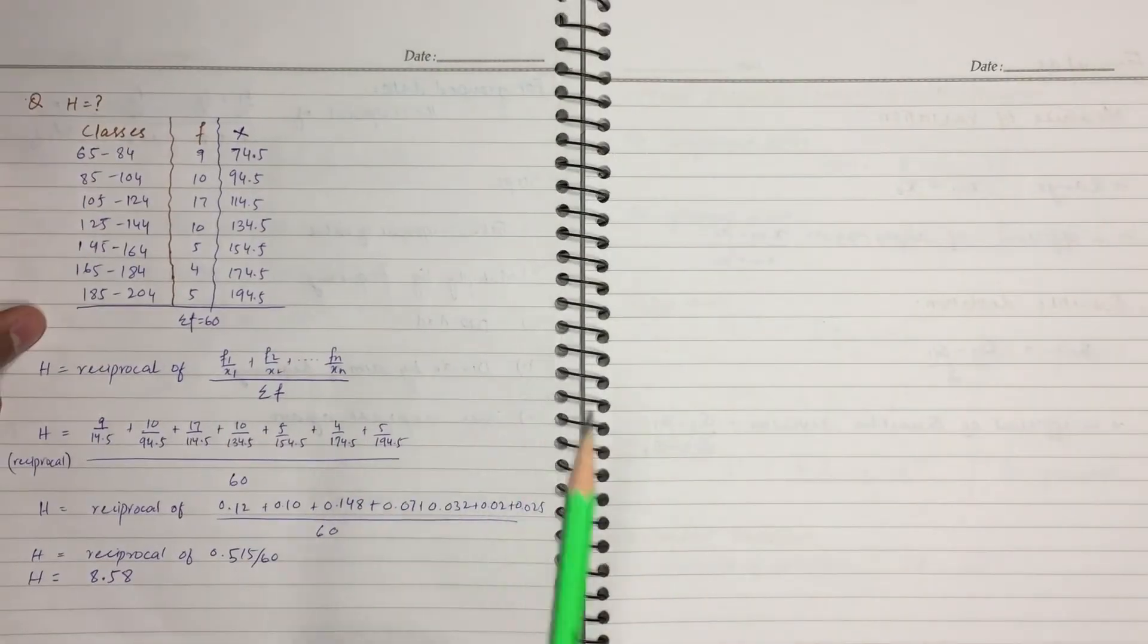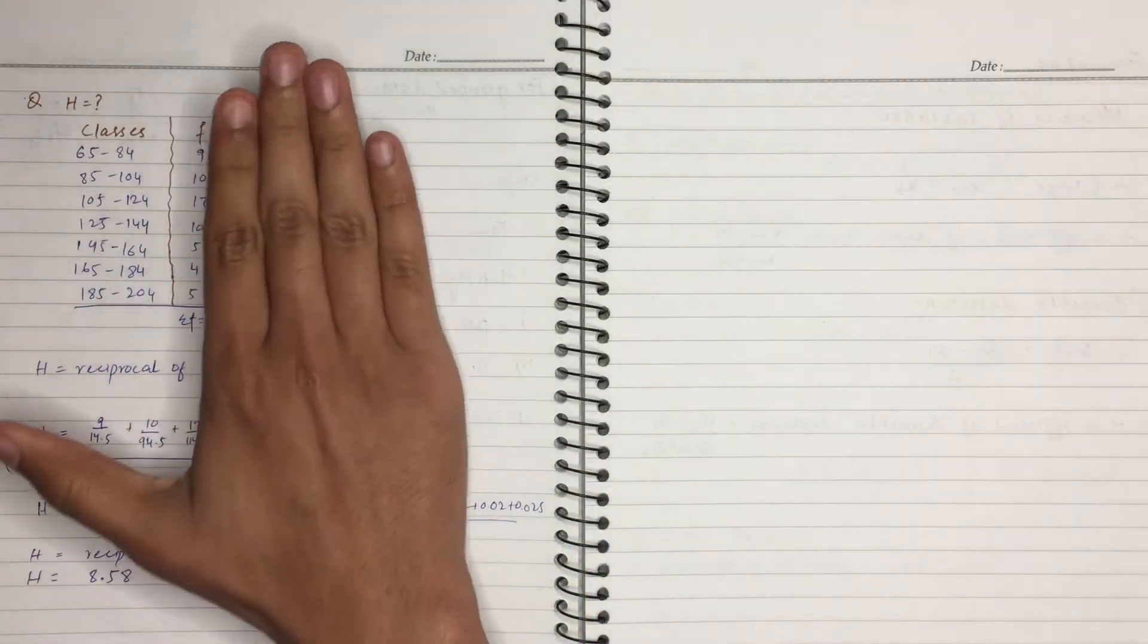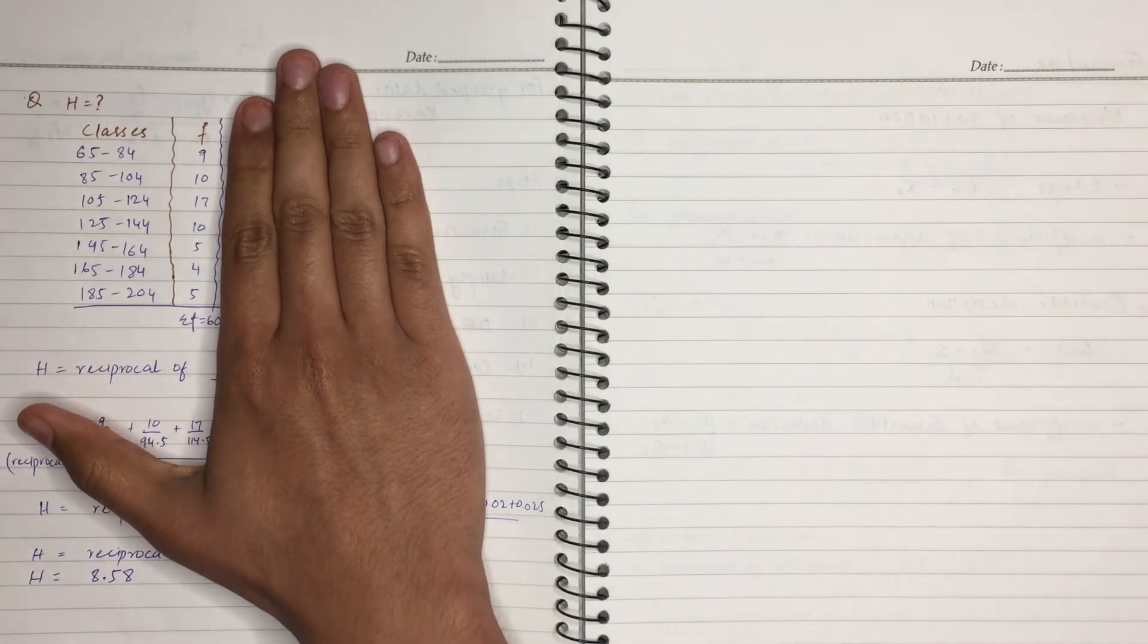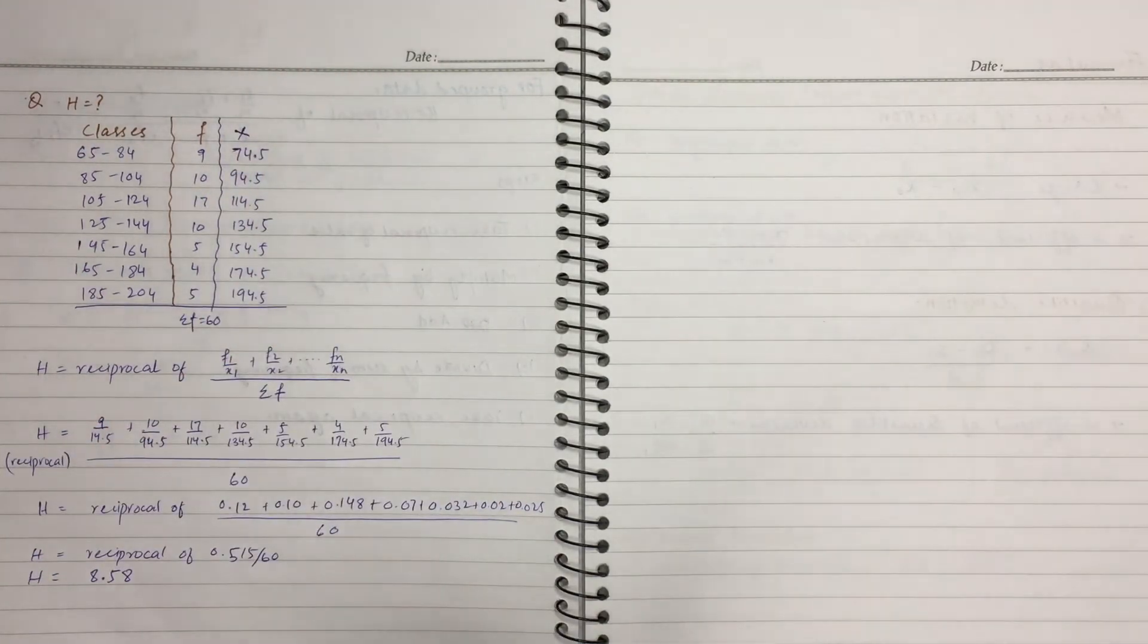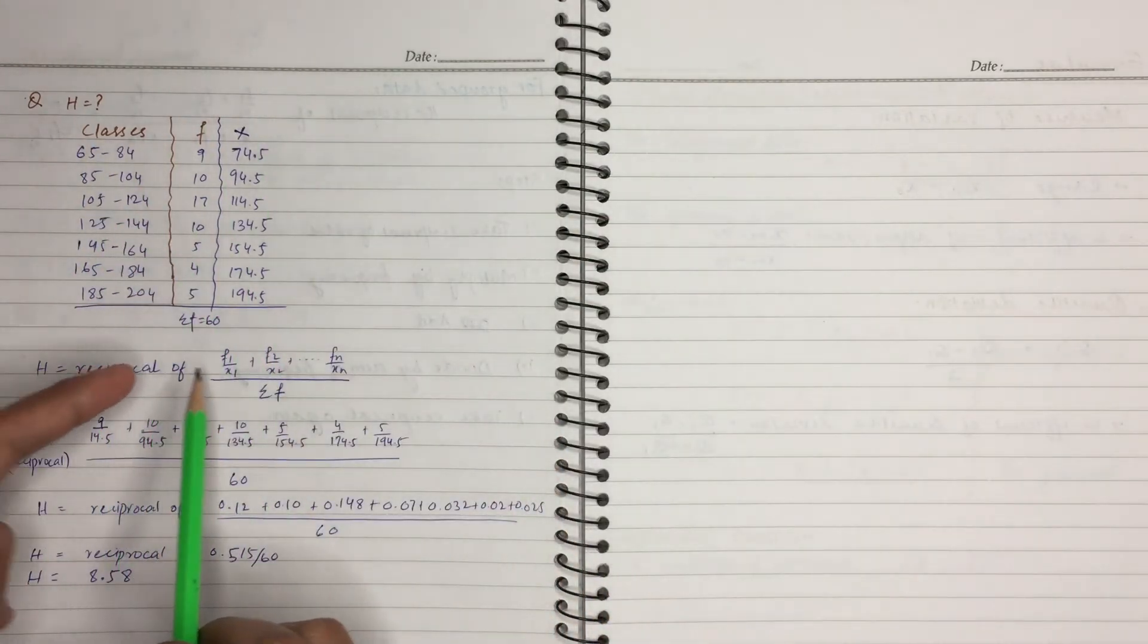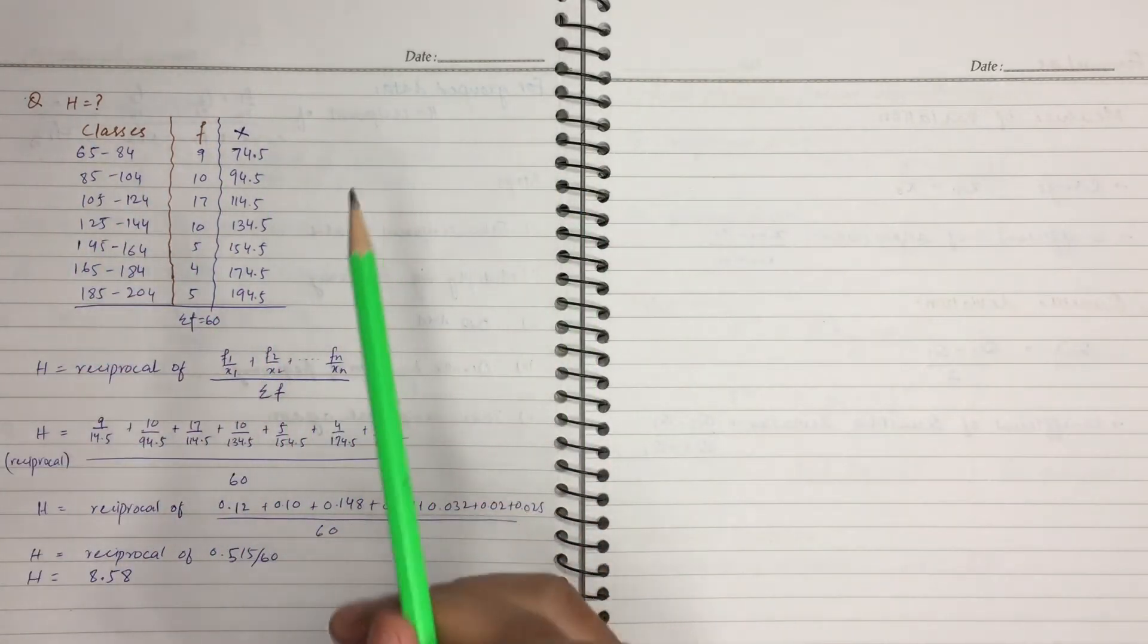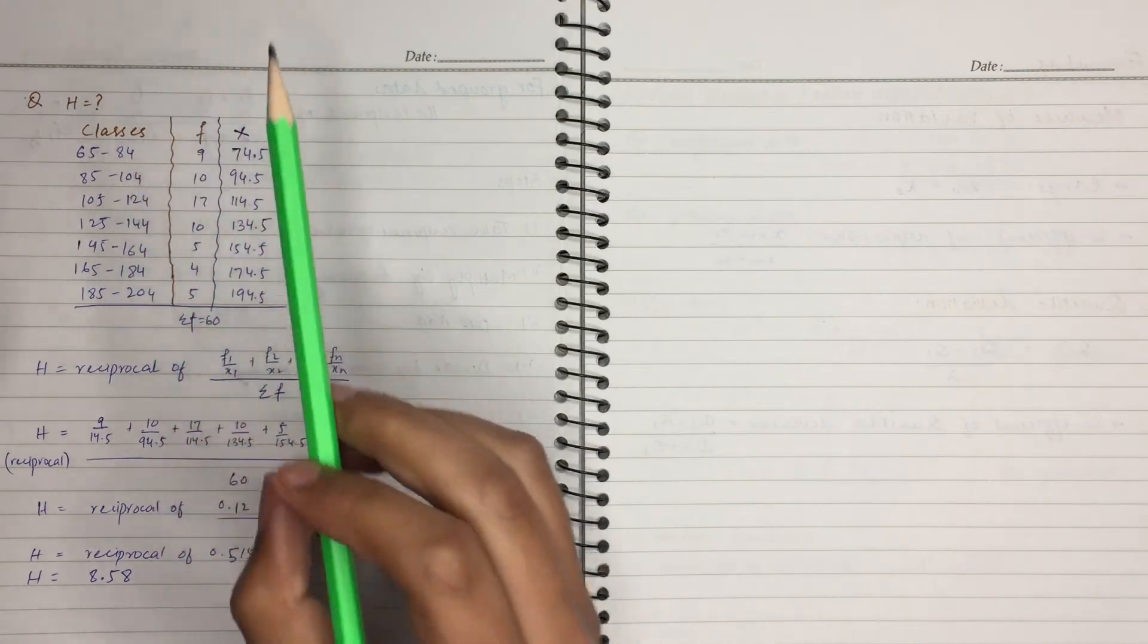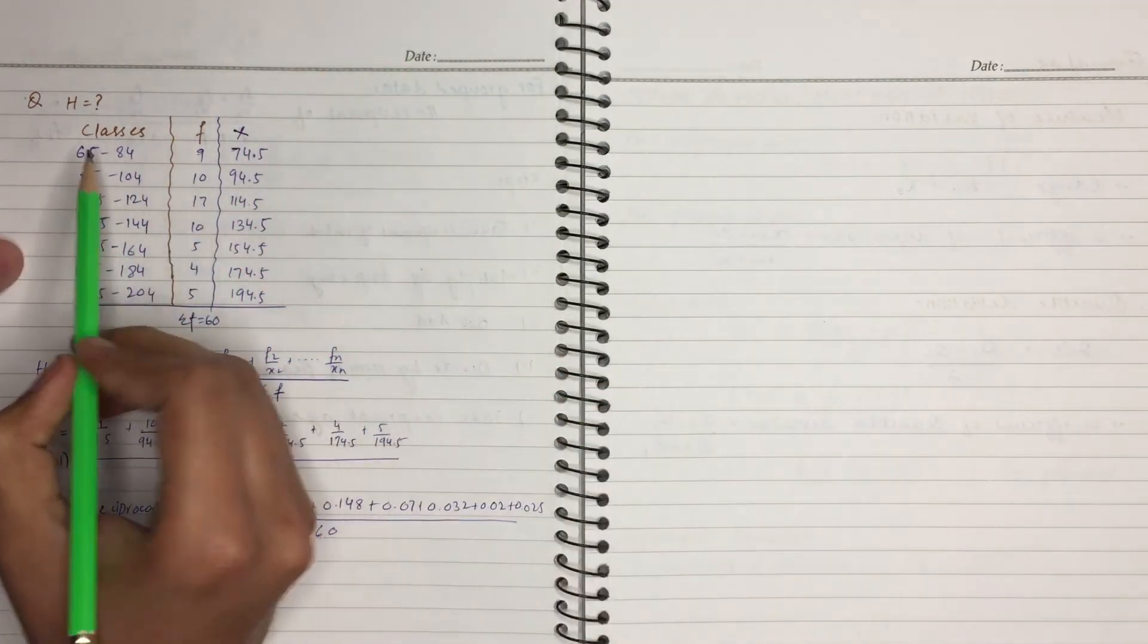So we have classes and frequency. Our formula, the first step is that we will find the midpoint.